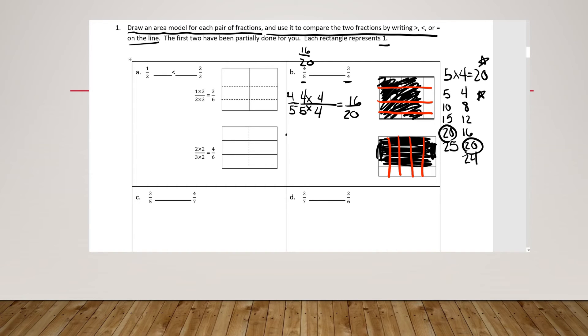And if I do the same for three fourths, three fourths equals something with twenty in the denominator. Three fourths times five, which you do on the top, you have to do on the bottom, equals fifteen twentieths. Now that I have two fractions with the same denominator, all I have to do is compare the top number, the numerator. And I know that sixteen is greater than fifteen.